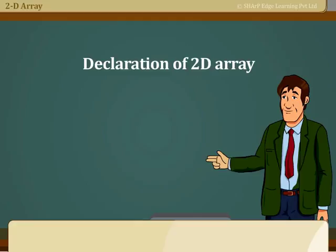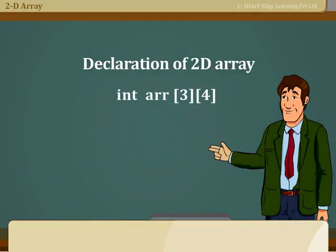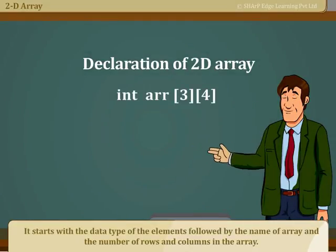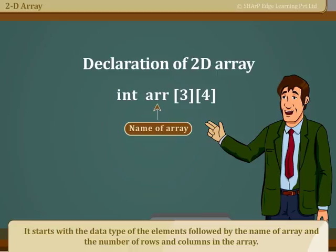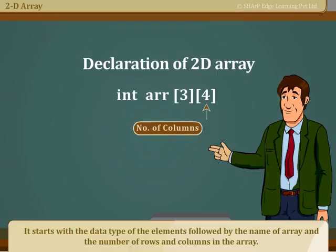Declaration of 2D Array. It starts with the data type of the elements followed by the name of array and the number of rows and columns in the array.